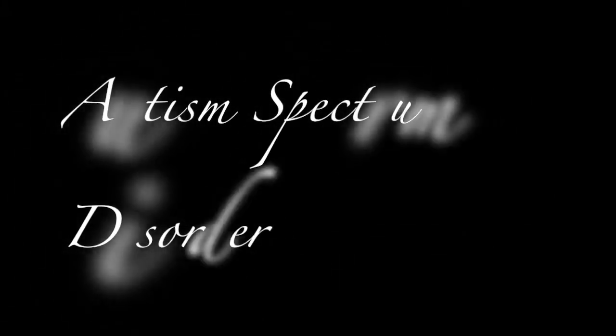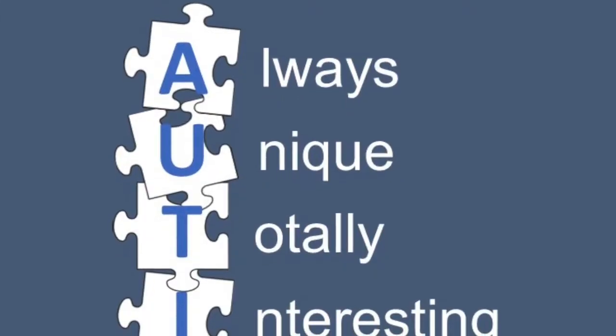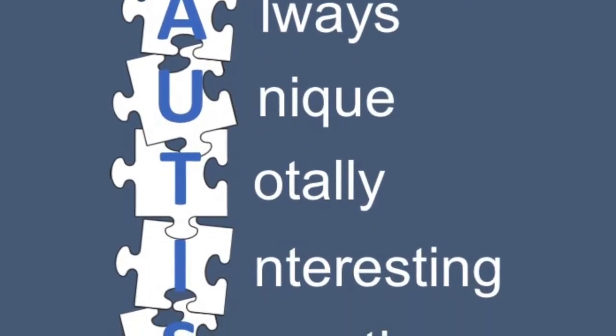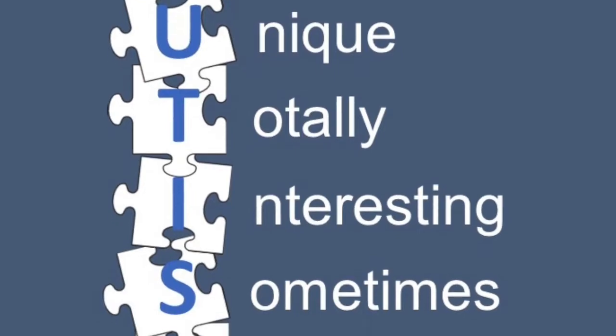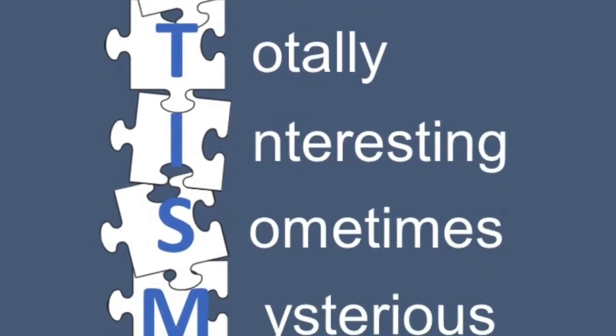What does it mean if someone is said to have an autism spectrum disorder? You could say that people with autism are always unique, totally interesting, and sometimes mysterious.